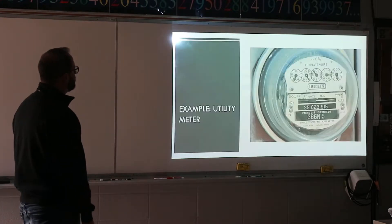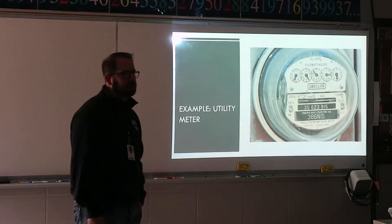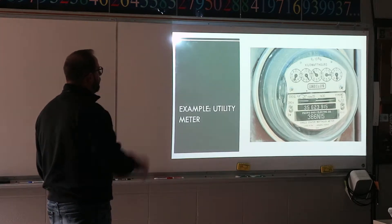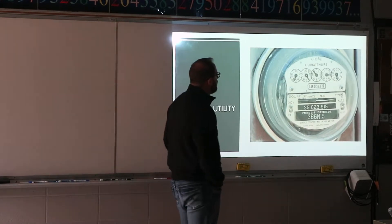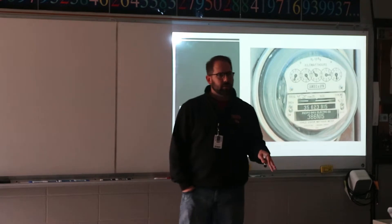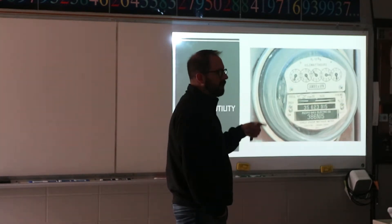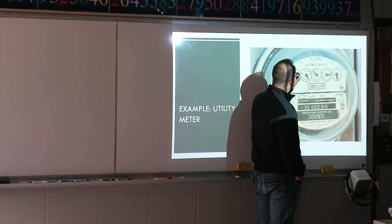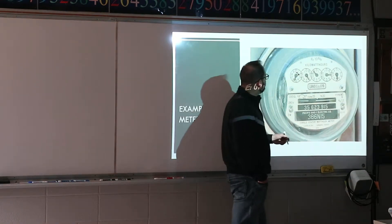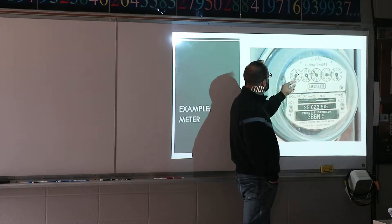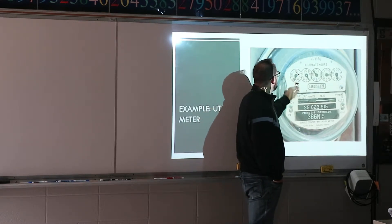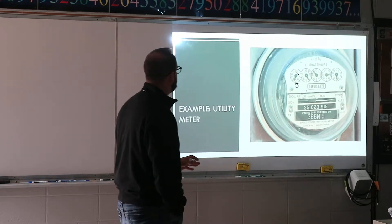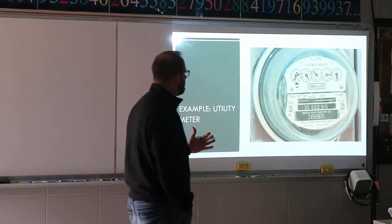So let's go through an example. This is an example of a meter — a gas and electric company meter. This is an old school meter with the dials. There are digital dials too, which I'll show you in a second. On a utility meter when you read it, there's no arrows on this one. Common sense — look at the numbers, and that'll tell you which way it's spinning. So on this first dial, zero, one, two — it's spinning this direction.